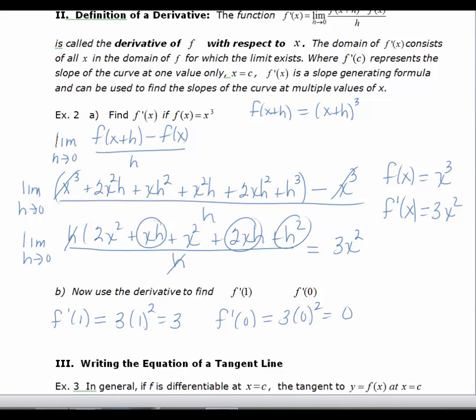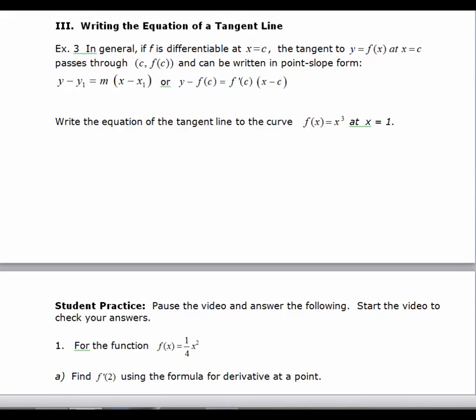Now that we know the slope of the tangent line is 3 at x equals 1, we can find the equation of a tangent line. If you look at Roman numeral 3, writing the equation of a tangent line, it says in general, if f is differentiable at x equals c—the word differentiable means you can find the derivative, or that the derivative is defined at x equals c—the tangent to y equals f of x at c passes through the point c, f of c. That is just the point of tangency, and can be written in point-slope form.